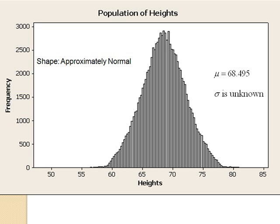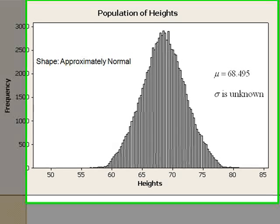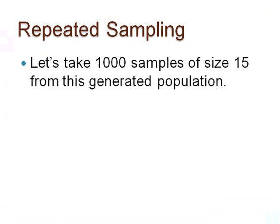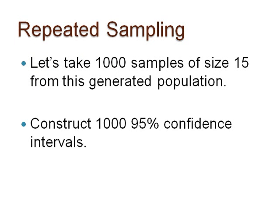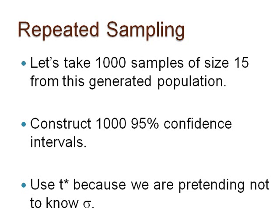Next, let's take 1,000 samples of size 15 and construct 1,000 95% confidence intervals to find out the percentage that capture the true population mean. I will use the t-star value for my confidence intervals because I am pretending not to know the population standard deviation.